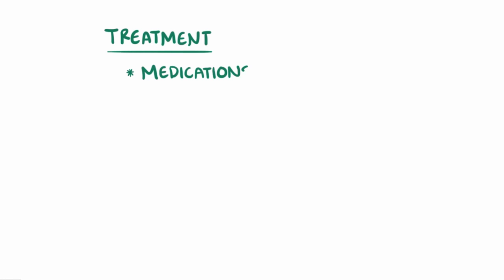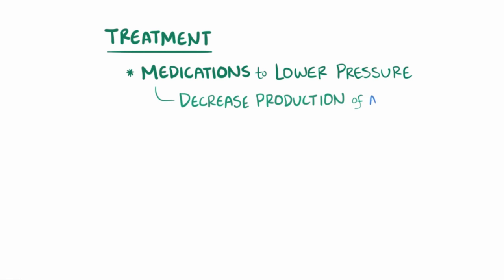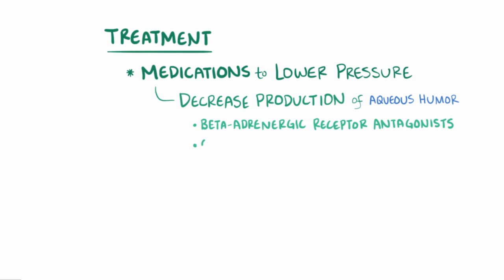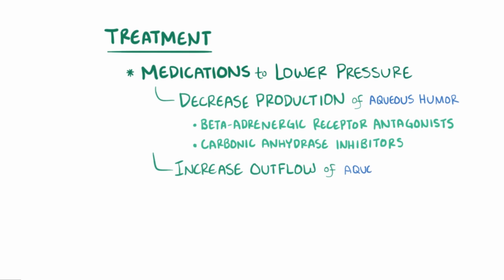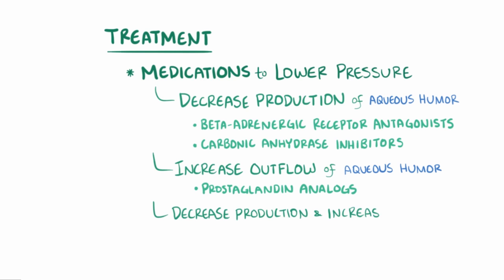Even though glaucoma is not curable, it can be slowed with treatment. If the underlying issue is intraocular hypertension, it can be managed by taking medications that decrease the pressure in the eye. This can be done by decreasing the production of aqueous humor with medications like beta-adrenergic receptor antagonists and carbonic anhydrase inhibitors. You can also increase the outflow of aqueous humor by taking prostaglandin analogues. Some medications both decrease production and increase outflow, like alpha-adrenergic agonists.